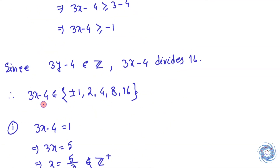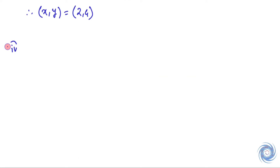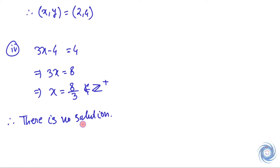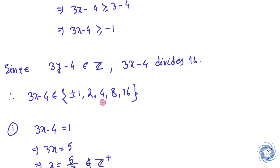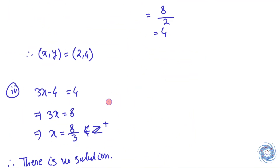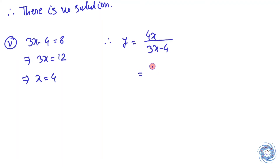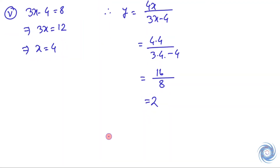Now let us take 3x minus 4 equals 4. Since x does not lie in Z+, there is no solution. Now let us take 3x minus 4 equals 8. From here we have x equals 4, and we get y equals 2. So here we have a solution.